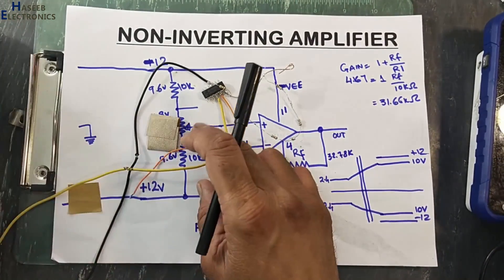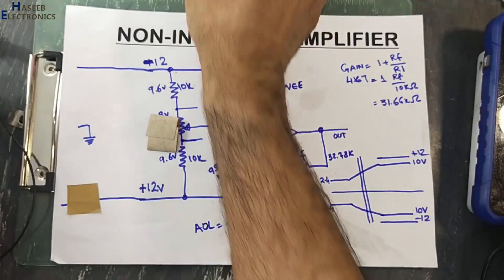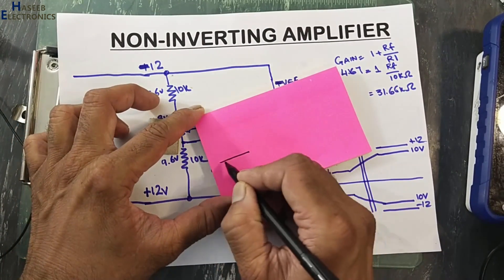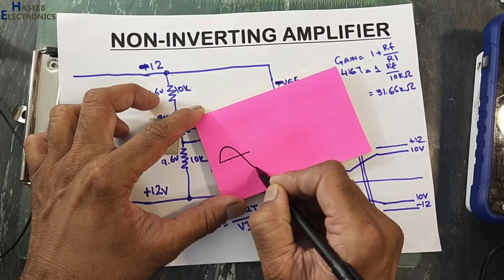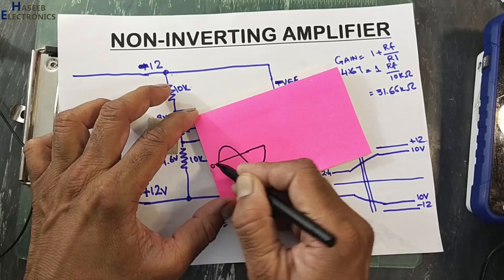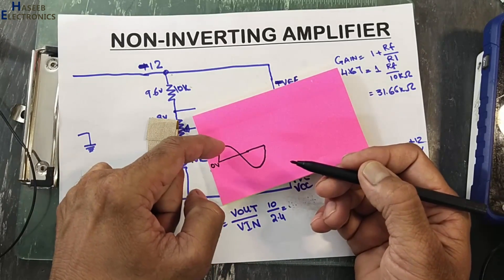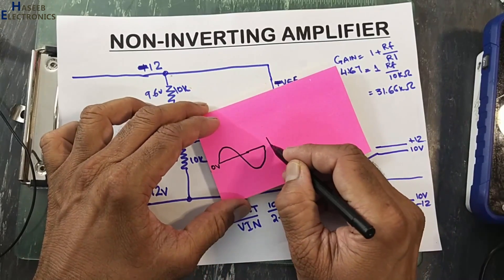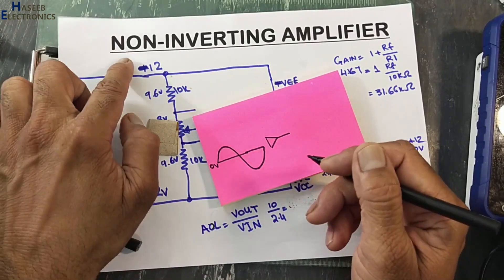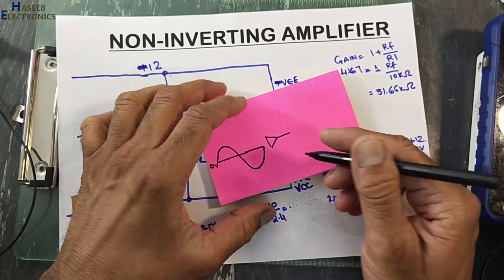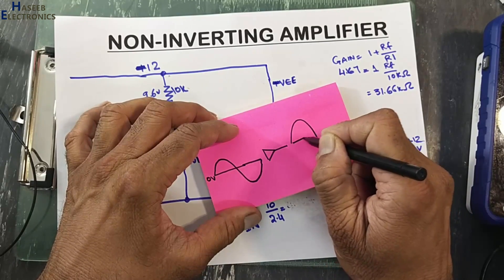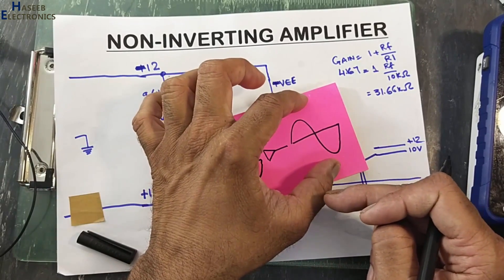Why we need two power supplies? Plus 12 volt, minus 12 volt, or any plus minus power supplies. When we have bipolar signal, any signal that is swinging in positive direction and then in negative direction, sine wave, square wave, sawtooth wave, whatsoever. But its amplitude is increasing or decreasing in both directions. Zero to up, zero to down. That time we use operational amplifier.